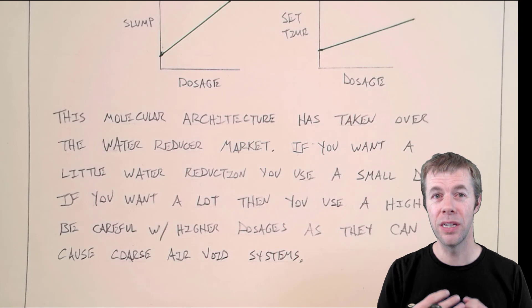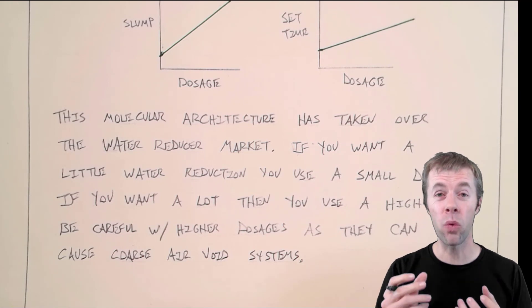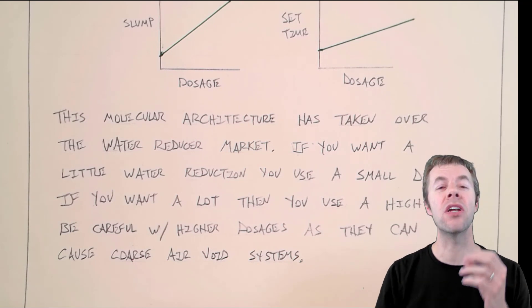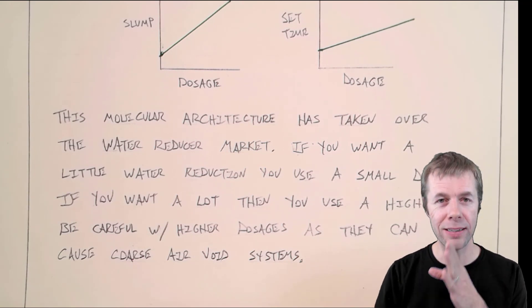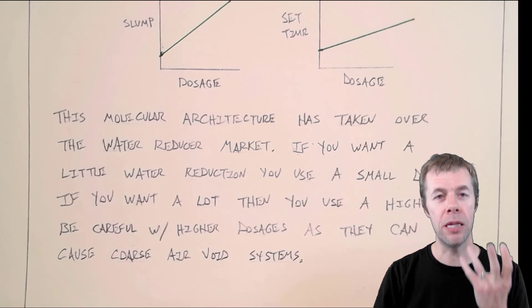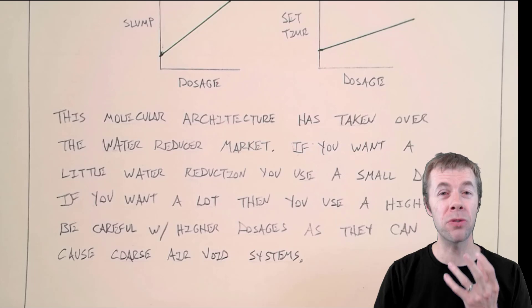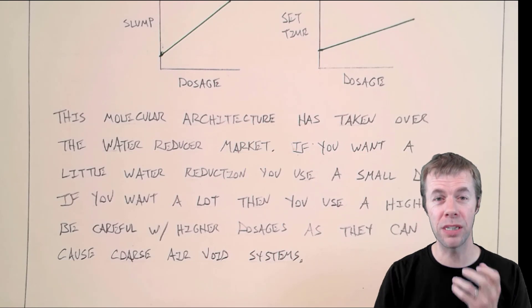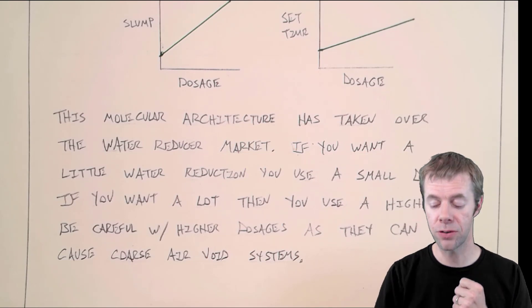Higher dosages of these systems can entrain air. A lot of these polycarboxylates actually contain defoamers - that's another admixture that they add to this one to try to make it not produce as many bubbles. And the bubbles that it produces are coarse, not the ones that we'd like to see. We want fine air void systems.